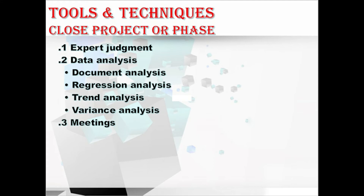Moving to the next technique, we have data analysis, which contains document analysis, regression analysis, trend analysis, and variance analysis. In document analysis, assessing the available documentation allows identifying lessons learned and knowledge sharing for future projects and organizational asset improvement. Regression analysis analyzes the interrelationships between different project variables that contributed to project outcomes to improve performance on future projects. Trend analysis can be used to validate the models used in the organization and implement adjustments for future projects.